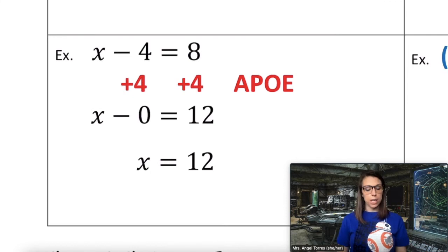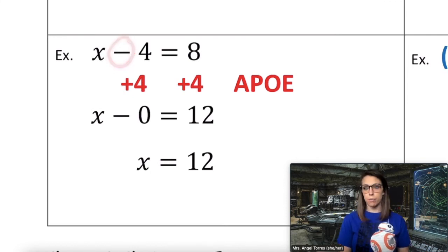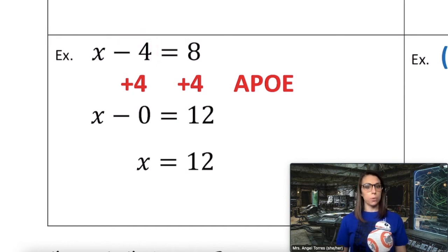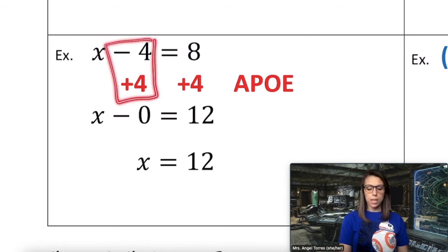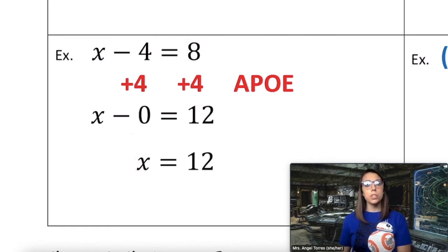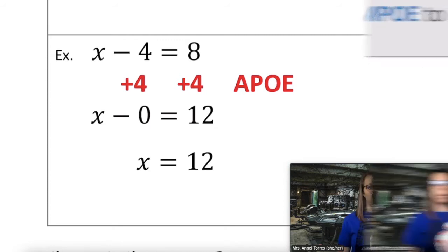As you can see in this equation, this is a difference — we are subtracting 4. When you see subtraction or a negative term, we think APO to make a zero term. Negative 4 plus 4 is 0, x minus 0 gives x by itself, and 8 plus 4 is 12. So when you see subtraction or a negative term, we think APO.